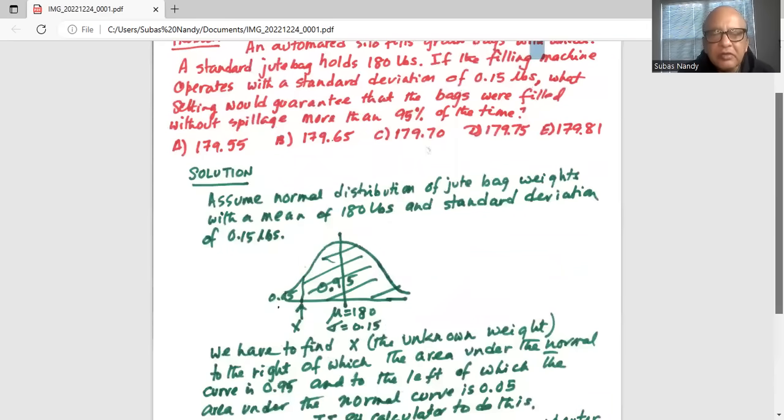What does it mean? That means if the setting of the machine is 179.75, then 95% of the time the bags will be filled without spillage.